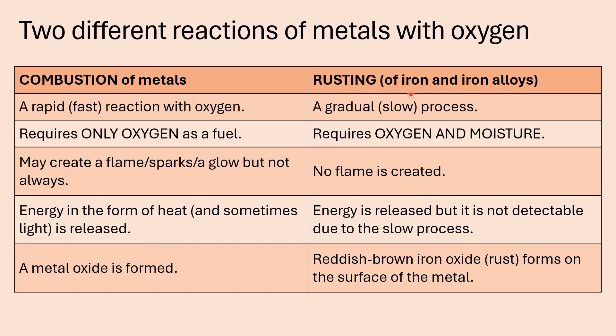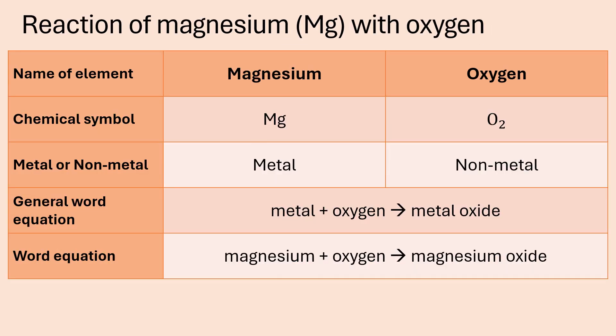On the other hand, rusting usually only takes place in iron or iron alloys — a mixture of iron with other metals. Rusting is a gradual or very slow process and it needs two things: oxygen and moisture. No flame is created during rusting, and energy is released, but because it's such a slow process, the release of energy is not really detectable. And then always a reddish brown iron oxide — that rust layer — forms on the surface of the metal.